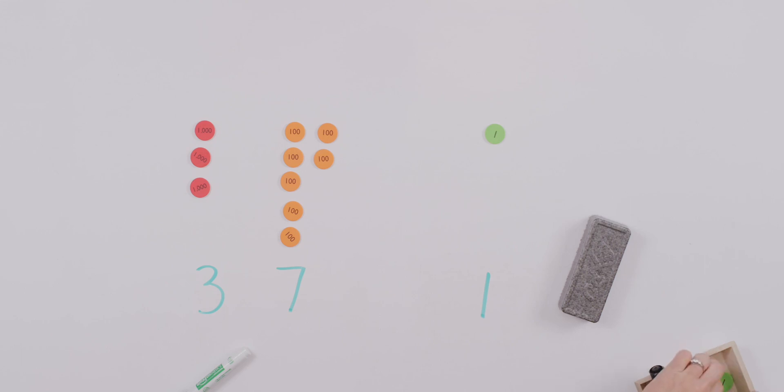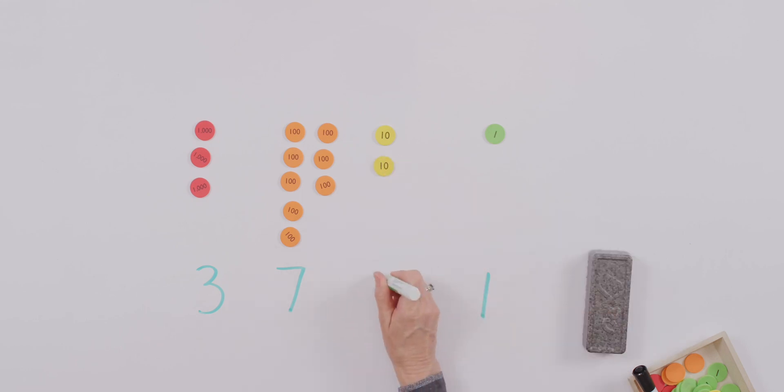Tell your teacher what we need to do. We're renaming those 10 tens as 100. What do I need to write here? All right. Now, we have 3,801. Let's keep counting by 10s. We've got one 10 in there now. 3,811. Here we go. And 3,821.